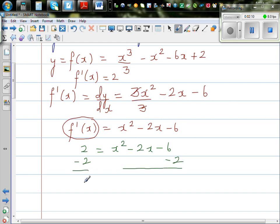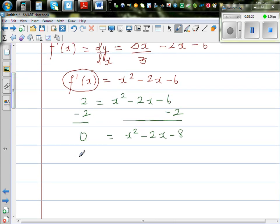sides, you get 0 is equal to x squared minus 2x minus 8 equals 0. So you can factorize this: x minus 4 times x plus 2 is equal to 0.